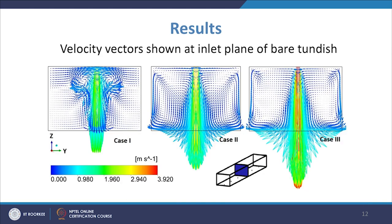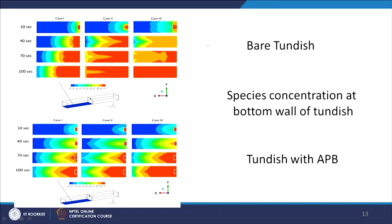Velocity vector plots show how the velocity is increasing across the three cases — in one case it is about 1.78 m/s and increases accordingly. Species concentration plots show how the concentration increases from the inlet over time with increasing flow. With APB and without APB there is an observable change in species concentration distribution within the tundish.